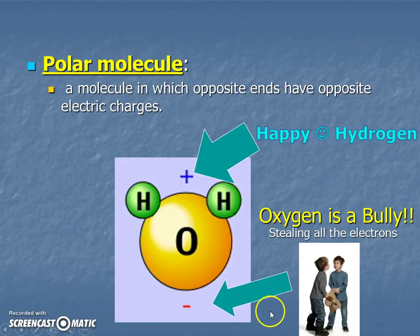And to help us remember, here's some memory tools that I highly recommend you write down. Hydrogens are happy, even though their big brother bully is stealing those electrons. Oh, look at them stealing that toy. But even still, hydrogens are trying to be happy. So opposite ends have opposite charges. One end is positive, one end is negative.